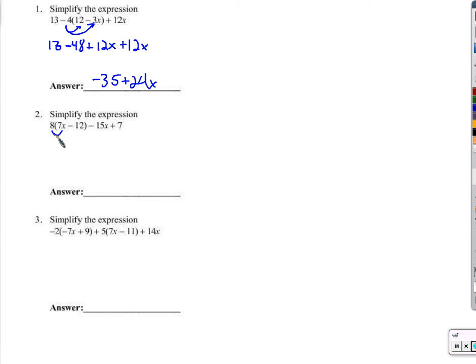8 times 7x. We're just going to go ahead and distribute this. 8 times negative 12. 8 times 7x is going to be 56x. 8 times negative 12 is going to be negative 96 minus 15x plus 7. 56x minus 15x is going to be 41x. Negative 96 plus 7 is going to be negative 89. So 41x minus 89.